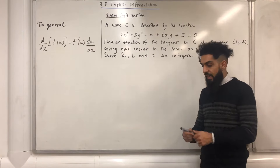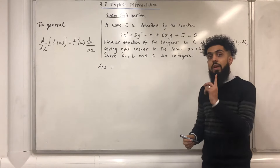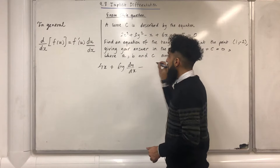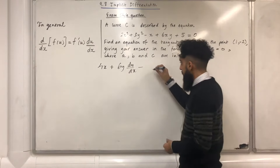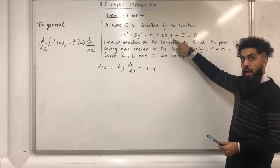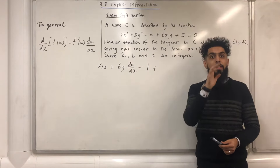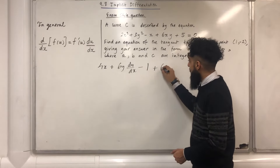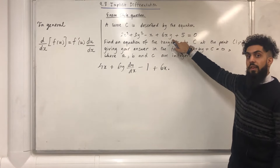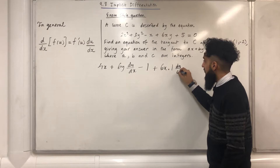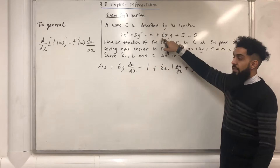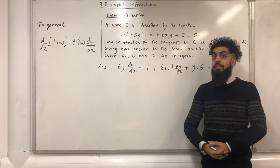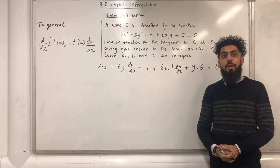Differentiating 2x squared with respect to x gives 4x. Differentiating 3y squared with respect to x gives 6y dy over dx. Differentiating x with respect to x gives 1. For the term 6xy, we have a product of two functions — 6x multiplied by y — so we need to use the product rule. That gives 6x multiplied by the derivative of y, which is 1 dy over dx, plus y multiplied by the derivative of 6x, which is 6. Differentiating 5 with respect to x gives 0, and differentiating 0 gives 0.